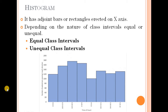First one is histogram. This is the histogram. The histogram is an adjoint bar — it makes a rectangle. If you see a rectangle, the rectangle graph is represented. The adjoint bar is represented and this is a bar graph. The histogram is represented as a histogram, then the bar graph is a rectangle.